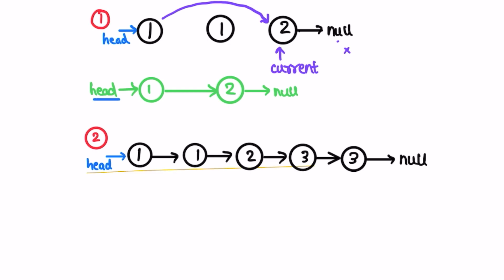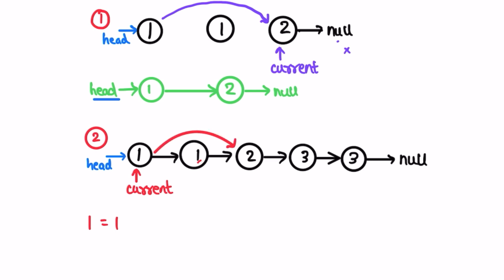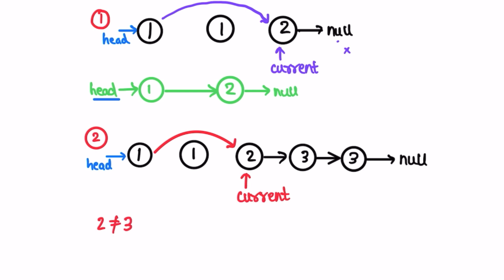Now let's take a look at the second example. We start off by creating a current node pointing to the head of the linked list and run a while loop until current and current.next are not equal to null. We check if current.val, which is equal to 1, is equal to current.next.val, which is also equal to 1. So we make current.next point to current.next.next and those connections are removed.